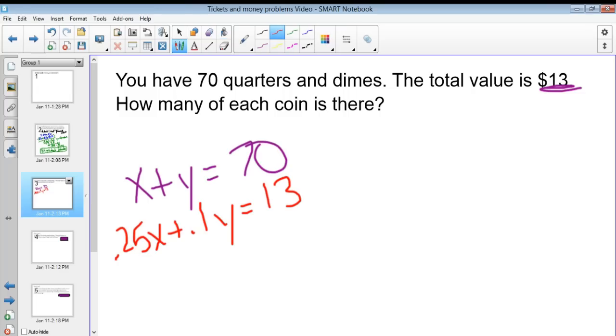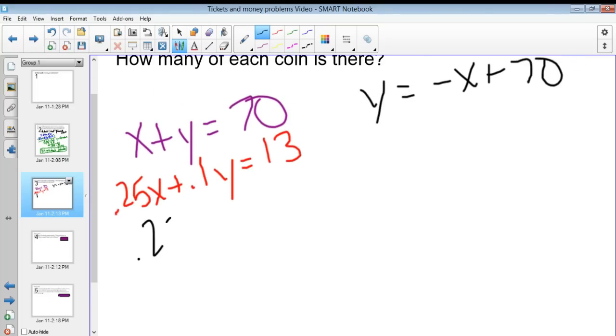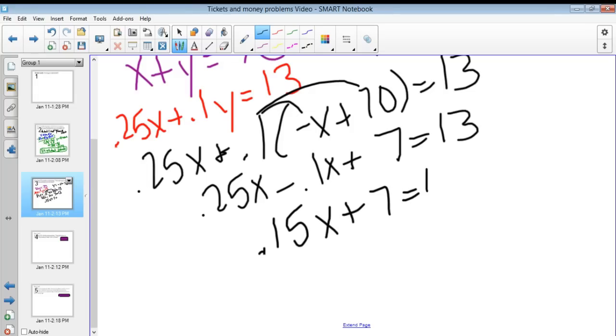I'm going to use substitution here, just because it'll be easier for me to solve in the end. I'm going to have Y being equal to negative X plus 70. So that means that 0.25X plus 0.1 times negative X plus 70 is equal to 13. I have to distribute that 0.1. So negative 0.1X, I'm going to drop down that 0.25X, plus 7 is equal to 13. Combining my like terms gives me 0.15X plus 7 is equal to 13. I subtract 7, and 0.15X is equal to 6. Now I have to divide both sides by 0.15 to get the X by itself.